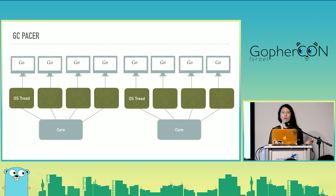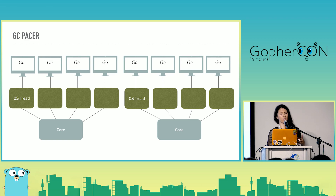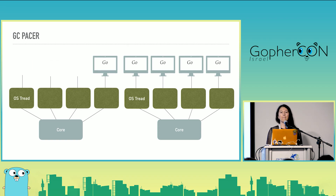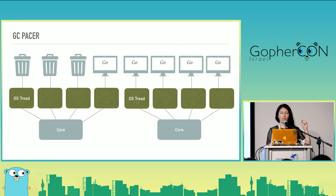We also have to account for the scheduler. This MacBook Pro is an Intel i5 dual-core, so we have our cores at the bottom, each able to run several OS threads. The scheduler is responsible for putting goroutines on those threads — obviously this computer can run more than eight goroutines, so the scheduler swaps them out as they need CPU time. When garbage collection runs, the garbage collector pacer coordinates with the scheduler to figure out how many OS threads should switch toward garbage collection, sacrificing program throughput in order to run the GC.